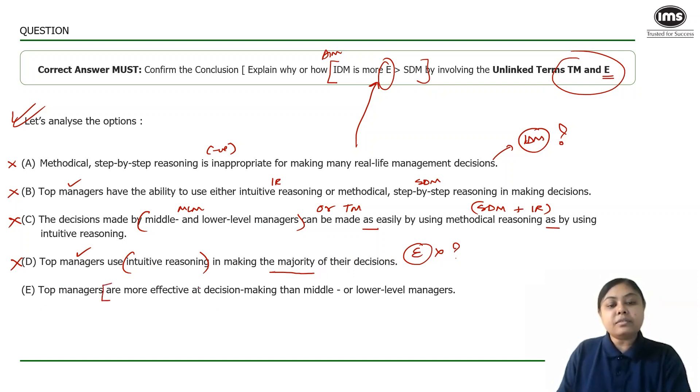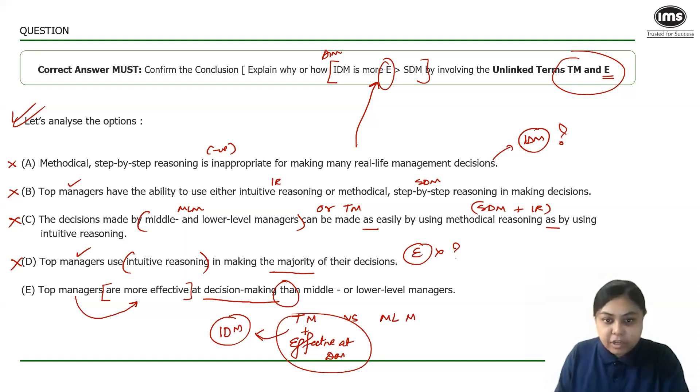I am left with E. Top managers are more effective at decision making than middle or lower level managers. So this option beautifully brings a comparison between top managers and middle or lower level managers and says that these managers are themselves very effective at DM. They are effective at DM. So the tool that they are using, which is intuitive decision making, by default should necessarily become effective because if they are effective at making decisions when compared to MLMs, the tool that top managers are using often will definitely add more credence and will be more effective when compared to SDM. If this option is true, this option explains why or how my conclusion is valid. Hence, for me, option E becomes the correct answer.